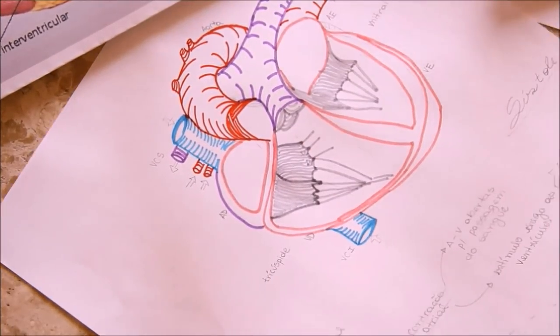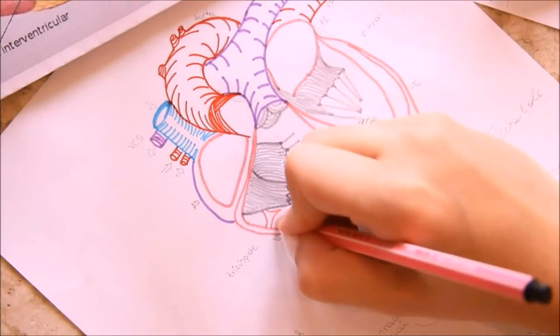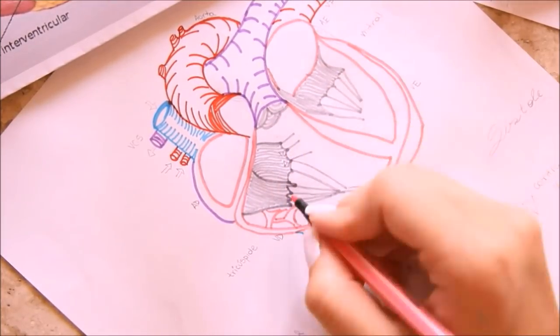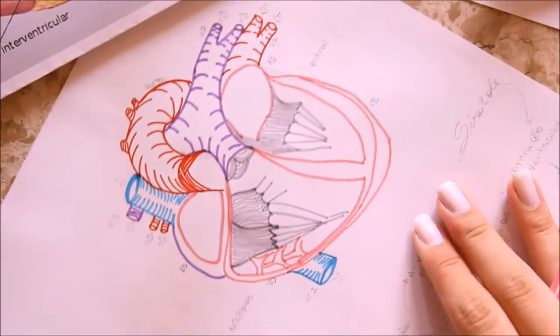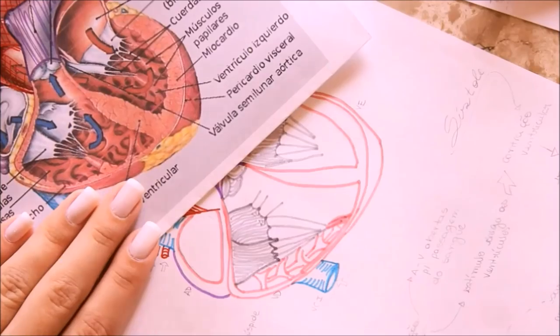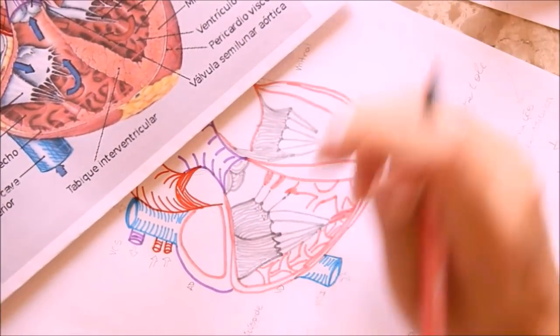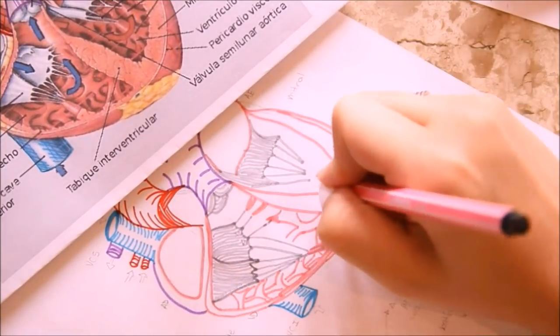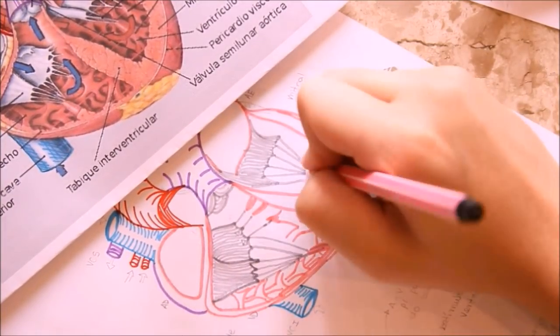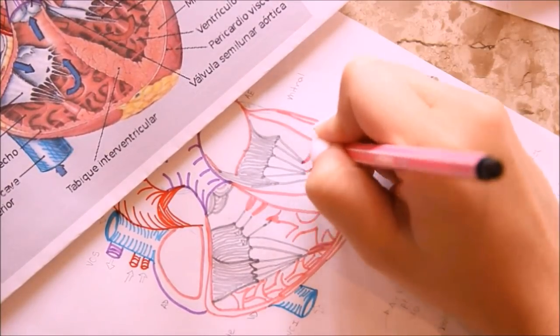And then I'll make the strokes closer where I want it to be darker, I'll leave the strokes more spaced out where I want it lighter. And then I grabbed the pen again to draw, imitating the design, the muscles there that control the valves in the opening and closing of the valves.